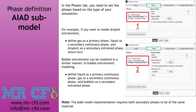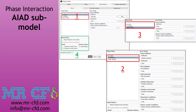For bubble entrainment, define liquid as the primary continuous phase, gas as a secondary continuous phase, and bubbles as a secondary entrained phase. Note that the AIAD model requires both secondary phases to be of the same material. Next, under the Forces tab, set the interfacial forces between phase pairs. For the primary and AIAD secondary continuous phases, you can define only drag and surface tension coefficients. The primary and secondary entrained phase pair has no restrictions on interfacial forces. The two phases of the same material interact via entrainment and deposition — no forces should be defined for such pairs.